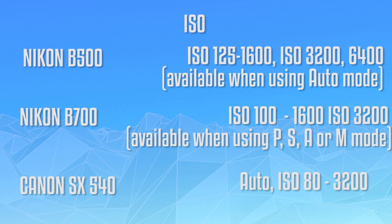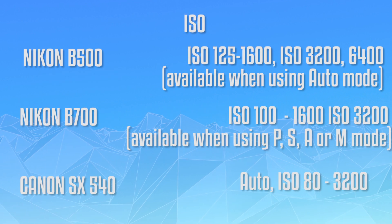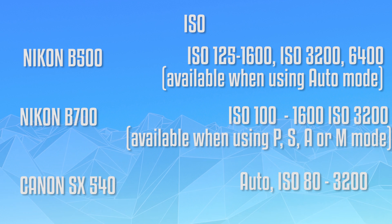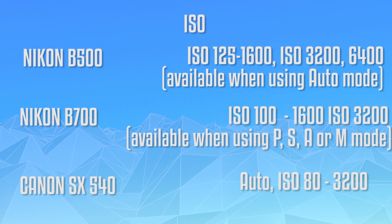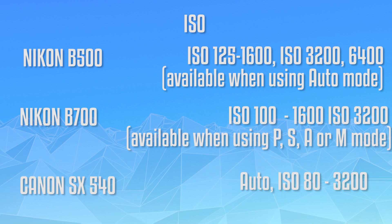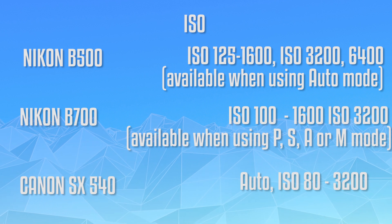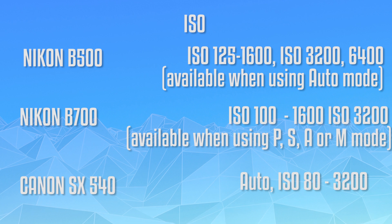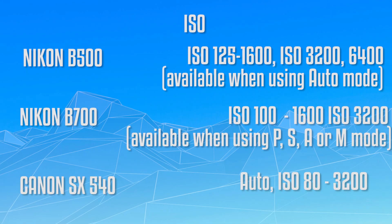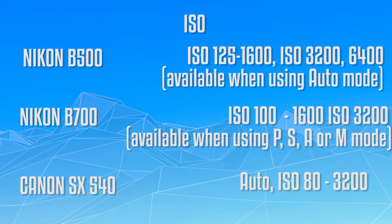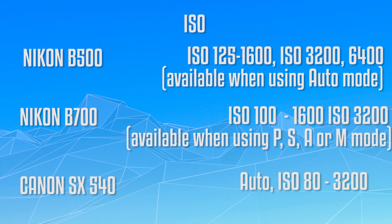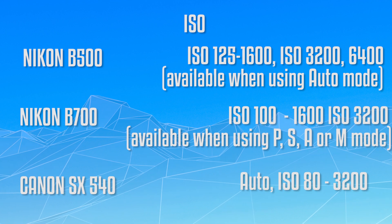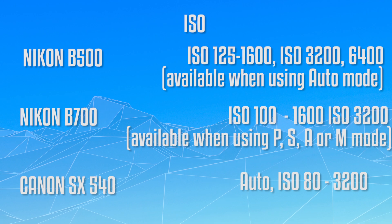The Nikon B500 has ISO levels from 125 to 1600, and 3200 to 6400 available in auto mode. The Nikon B700 has ISO from 100 to 1600, with 3200 available in manual mode. The Canon SX 540 has an auto ISO mode, and in manual mode ISO ranges from 80 to 3200.